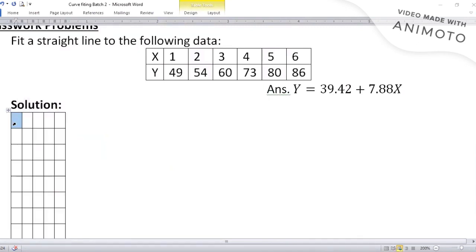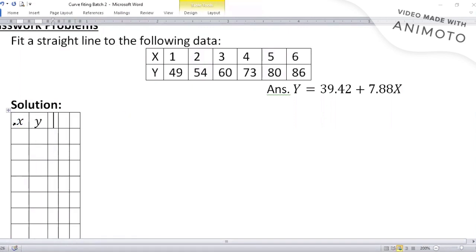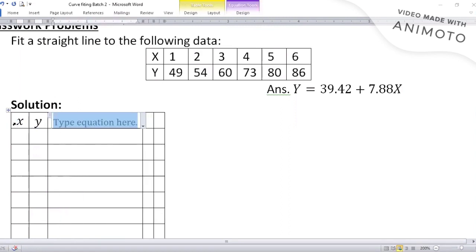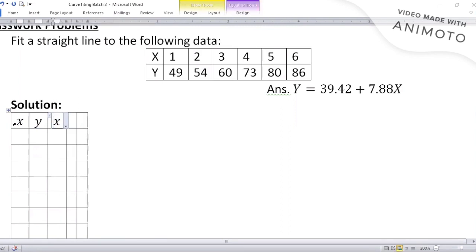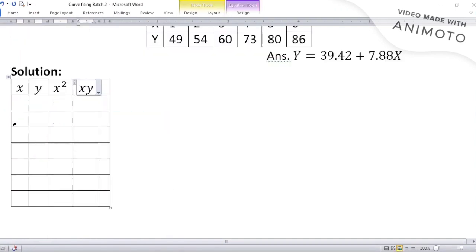So I write the given data as x, then a column for y, then a column for x square, and then a column for x into y. In fact, only four columns are required.